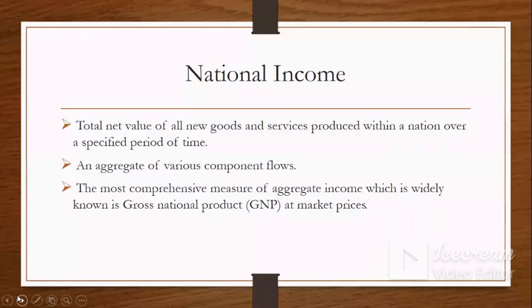National income is the total net value of all goods and services produced within a nation over a specific period of time. This is an aggregate of various component flows. We will discuss this later when I give you another video on the circular flow of macroeconomy.